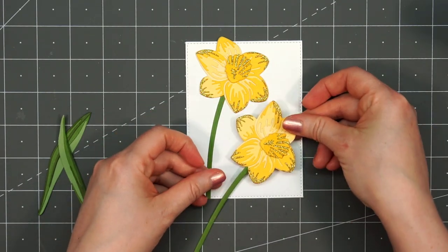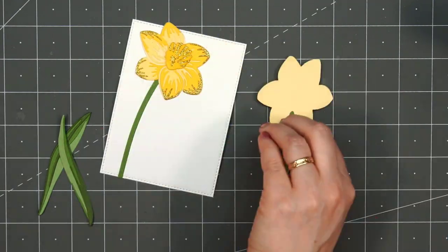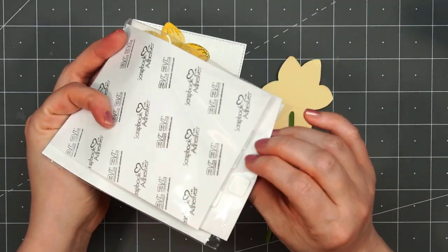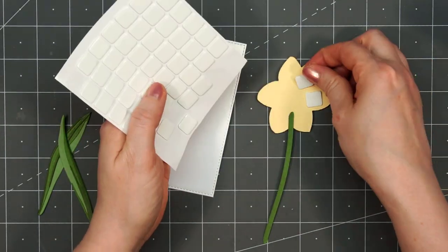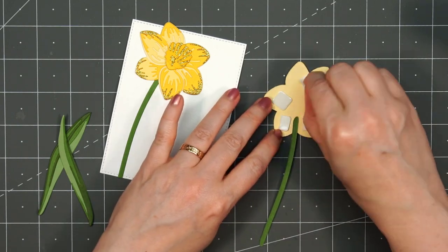Attaching the stem on the second flower, trying to get it at the right angle, and I decided to pop this one up using some thin foam squares. I'll only add the foam dimension on the flower, not the stem.